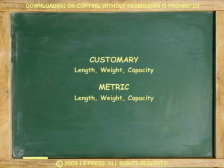In here, we cover three types of units: length, weight, and capacity. Because three types of units are covered using two systems, in reality we are covering six units. Customary length, weight, and capacity, and metric length, weight, and capacity.